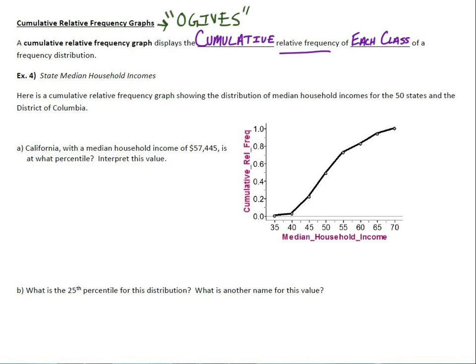So let's try this example out. Example 4 says state median household incomes. And the great part about this example, this data, is it's actually true. So all these examples that I use, that I get, that's what makes it kind of worthwhile, is they're all realistic, they're true. It says here is a cumulative relative frequency graph showing the distribution of median household incomes for the 50 states and the District of Columbia. Can't figure out those people. So we've got 50 states and D.C. in there. This is the distribution for median household income. It says California, with a median household income of $57,445, is at what percentile? Interpret this value. So I'm just going to give you a second to take a look at this graph and see how you might interpret that. If I told you where California was, obviously you can't exactly pinpoint it down here probably, but there's your median household incomes. And where you would guess California might be as far as the percentile.